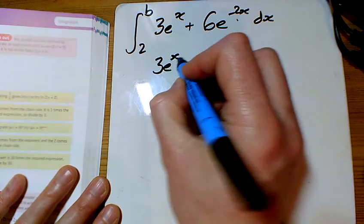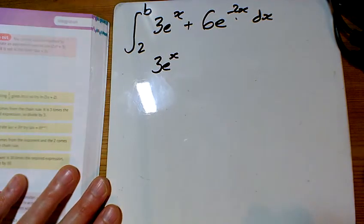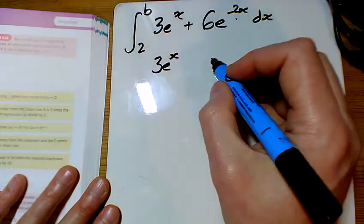So e^x integrates to give e^x, so that's 3e^x there, and this one here.